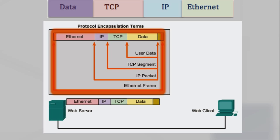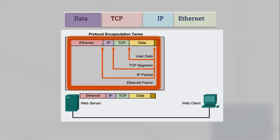The IP packet is sent to the network access layer, where it is encapsulated within a frame header and trailer. Each frame header contains a source and a destination physical address, which identifies the devices on the local network. The trailer contains error checking information. Finally, the bits are encoded onto the media by the server network interface card.